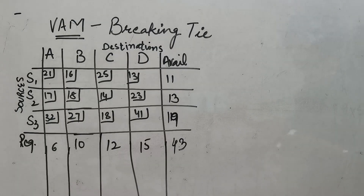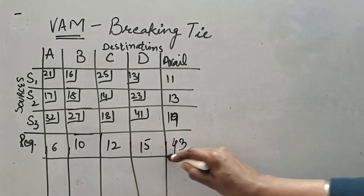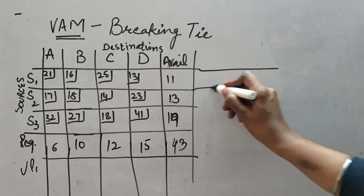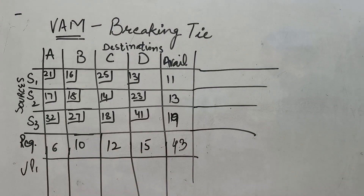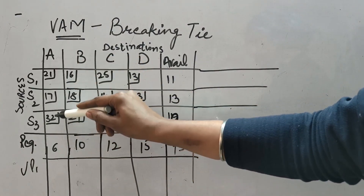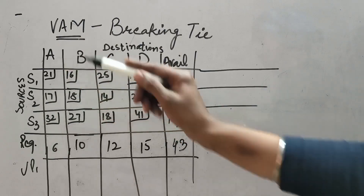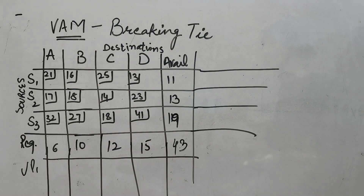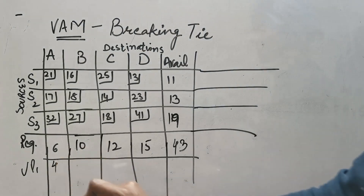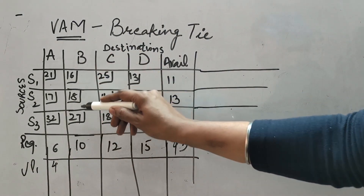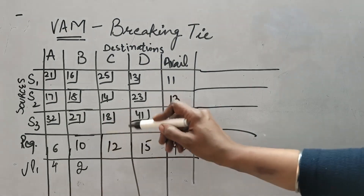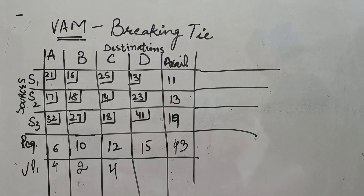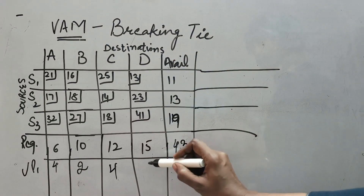As we have seen in the previous video, we have to calculate unit penalties from both sides — row and column. For UP1, going inside the cell: three values, the least is 17 and next least is 21, so difference is 4. UP1 value is 4. Going to the next row: 16 and 18 are minimum, so it will be 2. Then 14 and 18 gives 4. And in the last row, 13 and 23 gives 10.